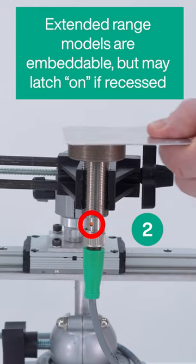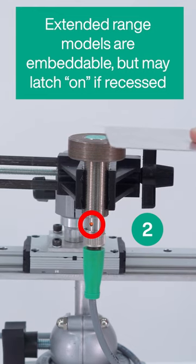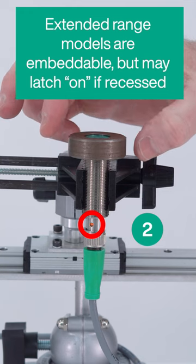Sensor 2 is an extended range model. It works great when embedded, but just a slight recess causes the sensor to latch.